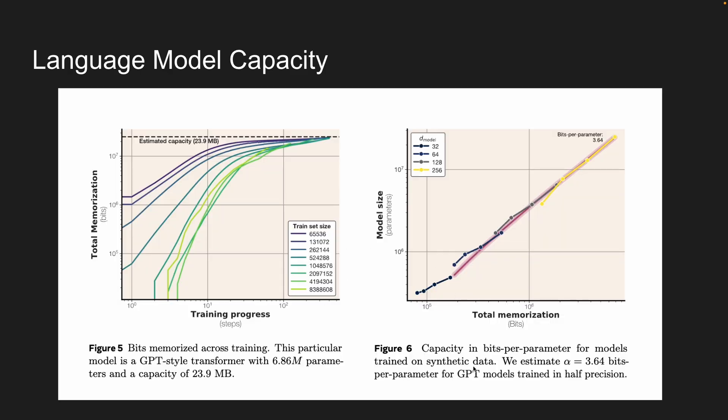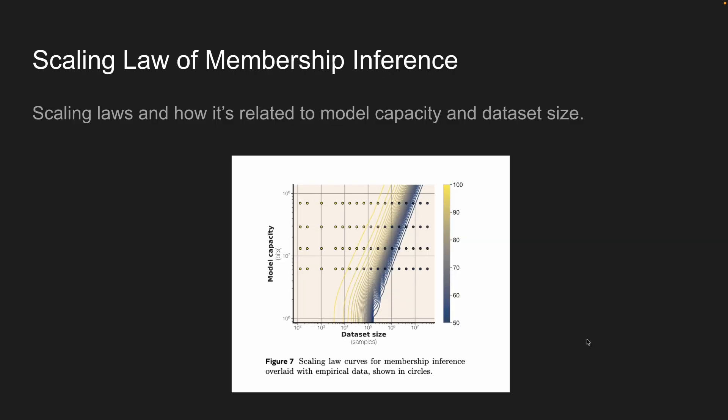There's another graph depicting 3.6 bits per parameter for a GPT-based or transformer-architecture-based model.